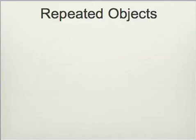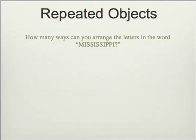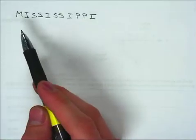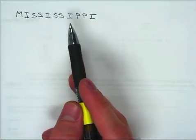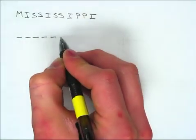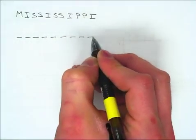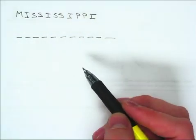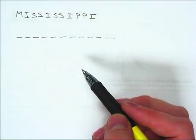The next type of arrangement is the repeated objects arrangement. For example, how many ways can we arrange the letters in the word Mississippi? Looking at that word, there are 11 different letters. So if that's all we cared about, we would say there are 11 different positions. If we use the linear arrangement formula we just talked about, that would be 11 factorial.